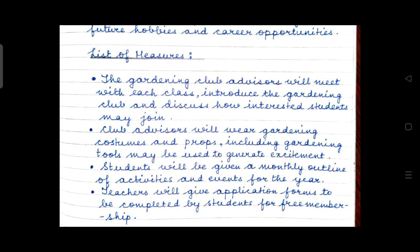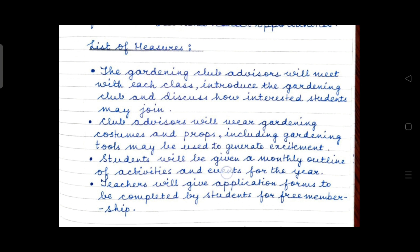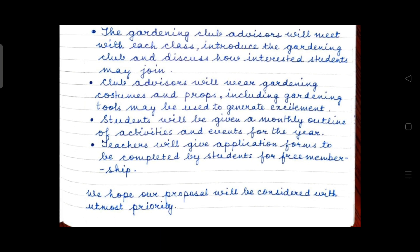Read the question thoroughly and frame your answers according to what is asked. Use the hints given in the question. In this way, you will be able to score full marks in proposal writing. Always conclude with a good summing up — do not end abruptly. Use a sentence like: 'We hope our proposal will be considered with utmost priority.' You may also write: 'We hope that our proposal will be accepted.' But always write an appropriate ending statement.